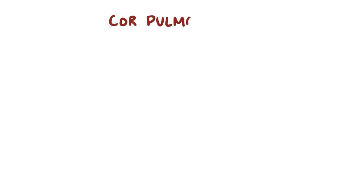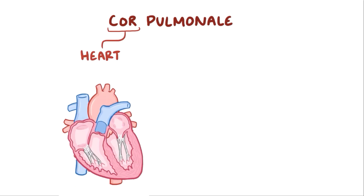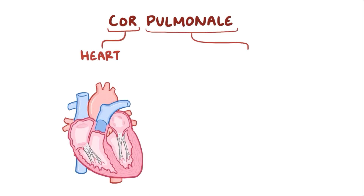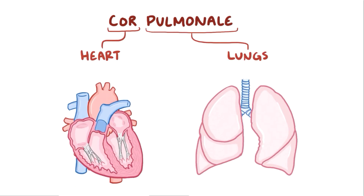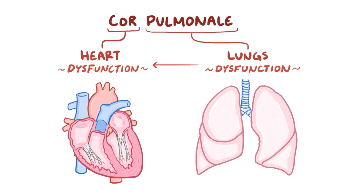With cor pulmonale, 'cor' is Latin for heart, and 'pulmonale' is Latin for lungs. Cor pulmonale, then, is a relationship between the two — it's when a disorder of the lungs causes dysfunction of the heart.